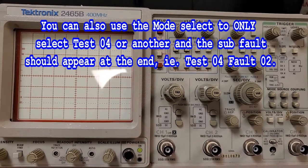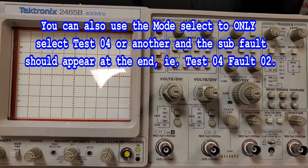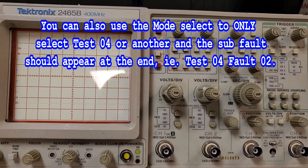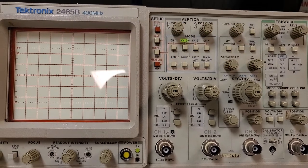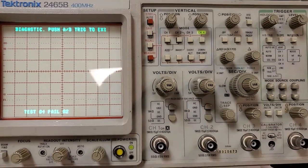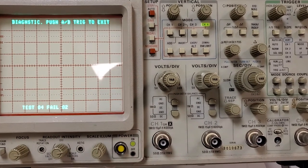So if it failed test four, there are a few tests that when you turn the scope off and turn it back on, it'll tell you - it'll automatically go into the diagnostic test to tell you there was a failure. It's powering up, see the lights are clicking, and mine failed test four number two. So let's go see what that is.